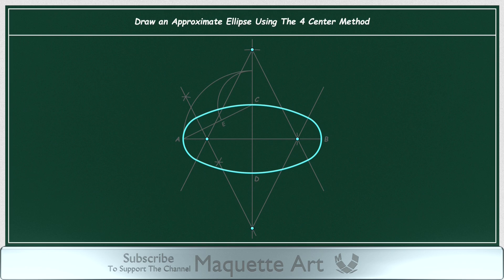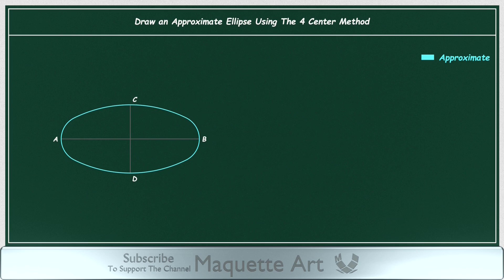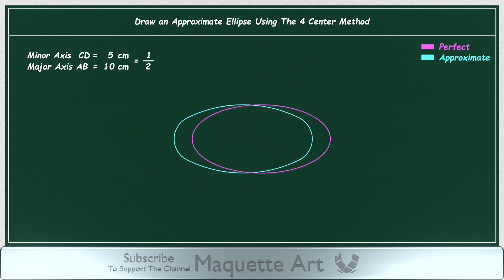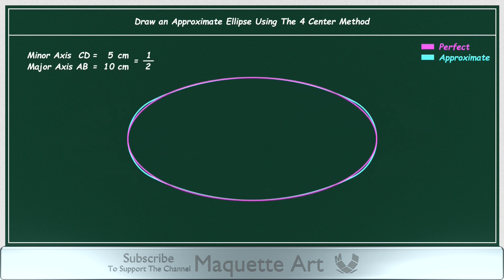At the beginning of this video I mentioned that this ellipse is approximate, meaning it is not a 100% perfect ellipse. But how accurate is this method? Let's make a comparison. Any ellipse has a major axis and a minor axis. The ratio between those two axes determines the shape of the ellipse. In this ellipse, for example, the ratio between the minor axis to the major axis is 1 over 2, meaning the length of the minor axis is half the length of the major axis. This is a perfect ellipse, while this one is an approximate ellipse drawn using the four-center method. When comparing them together, you can see there is a slight difference in the curves of the approximate ellipse — I will refer to this difference as an error.